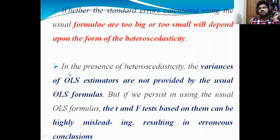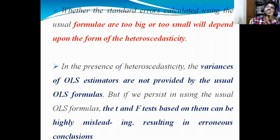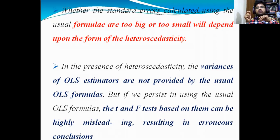In the presence of heteroscedasticity, the variance of OLS estimators is not provided by the usual OLS formulas. When there is a presence of heteroscedasticity, the variance of OLS estimators is not provided by the usual OLS formulas. When you are estimating the model with OLS, it will not provide the variance of the estimators. On the basis of variance only, we will come to know which variable has more variance and which has less variance. As I told you in semester one or two: if the variance is low, it is consistent — it is very desirable. Minimum variance is desirable; maximum variance is not desirable.